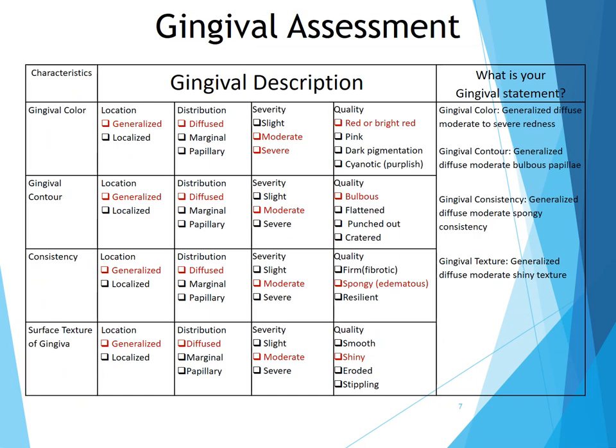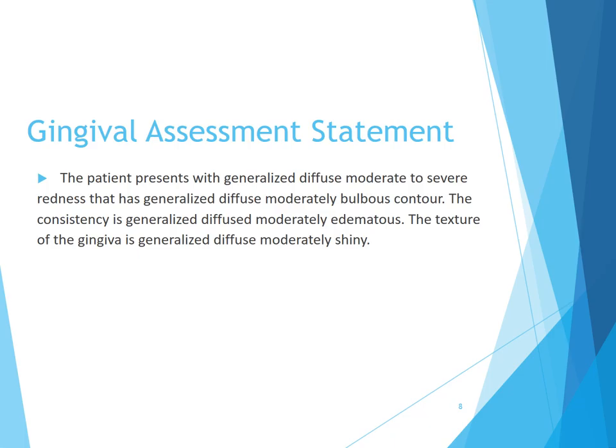The gingival assessment: gingival color is generalized diffuse, moderate to severe redness. Gingival contour is generalized diffuse, moderate bulbous papilla. Gingival consistency is generalized diffuse, moderate spongy consistency. Gingival texture is generalized diffuse, moderate shiny texture. The gingival assessment statement is that the patient presents with generalized diffuse, moderate to severe redness, moderately bulbous contour, moderately edematous consistency, and moderately shiny texture.